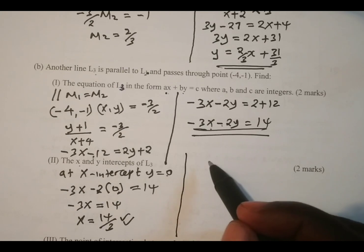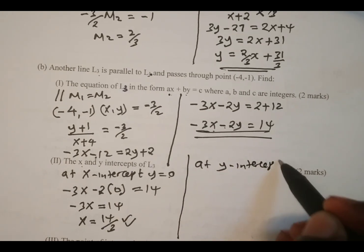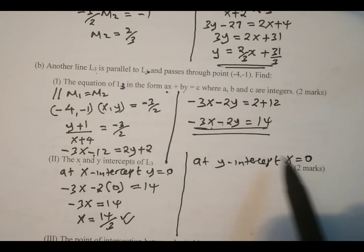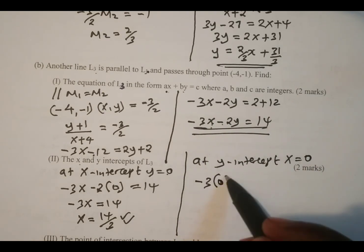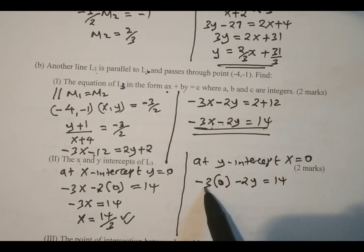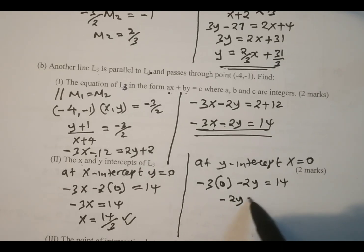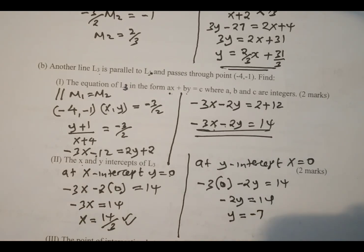For the y-intercept, the value of x is always equal to 0. Substituting x equals 0 into the equation: negative 3 times 0 minus 2y equals 14, so negative 2y equals 14. Dividing by negative 2, the value of y equals negative 7. That is the y-intercept.